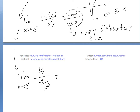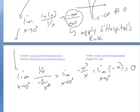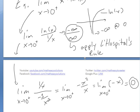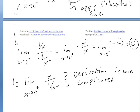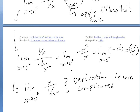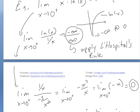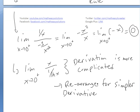Rearranging (1/x) divided by (−1/x²) gives us −x²/x, which simplifies to −x. Taking the limit as x approaches 0⁺ of −x gives us 0. So the limit equals 0. We could have also rearranged with x on top and 1/ln(x) on the bottom, but that derivative is more complicated. Always rearrange for the simpler derivative — it's easier to differentiate 1/x than 1/ln(x).